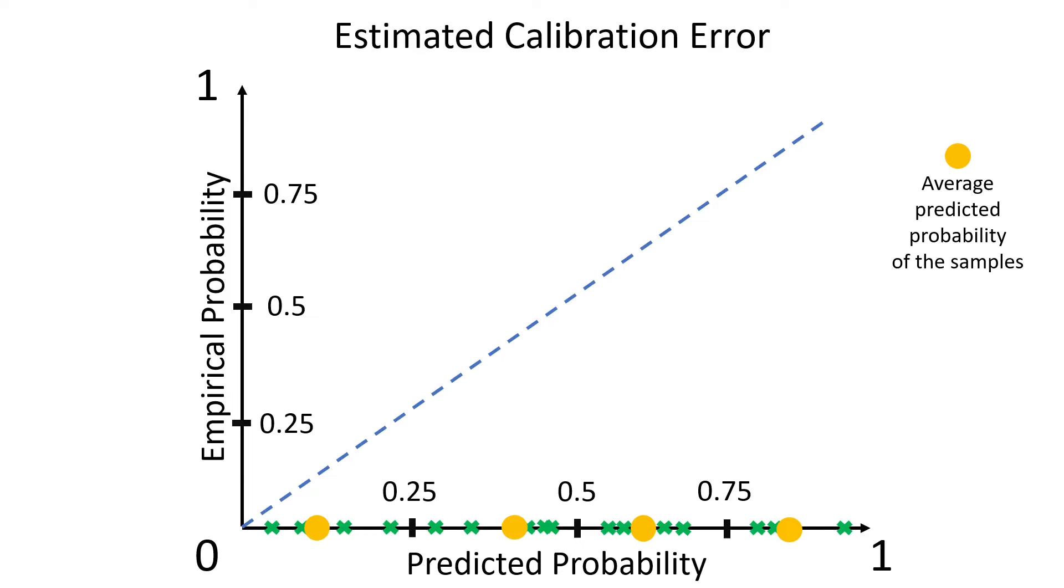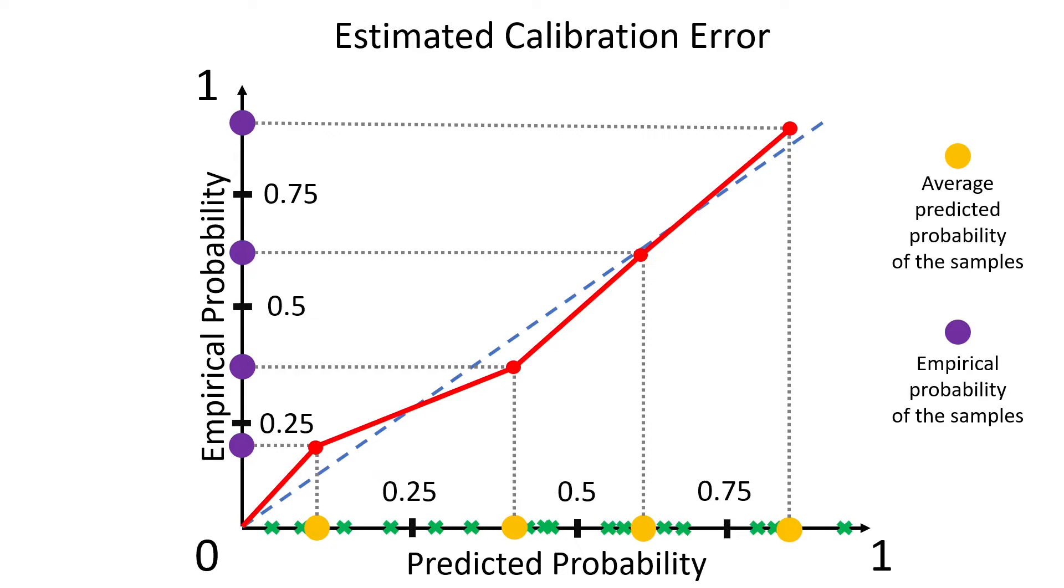One, the average predicted probability of the samples in each bin and two, the empirical probability of the samples by counting how many samples in that bin were actually positive. And now we can finally draw our reliability curve by uniting these two estimates in each bin.